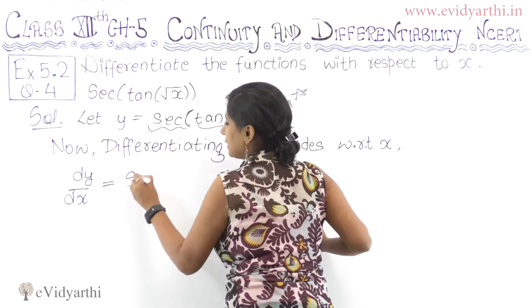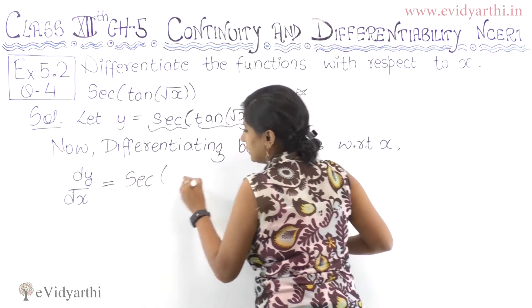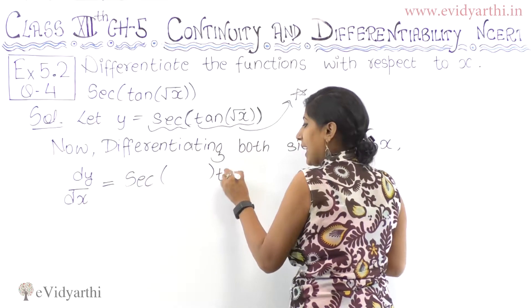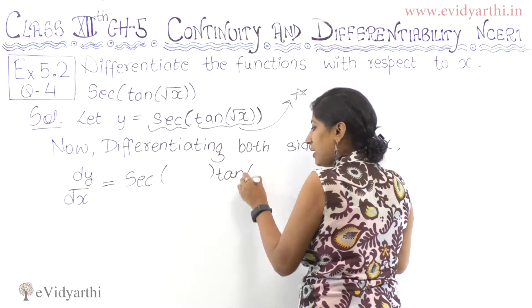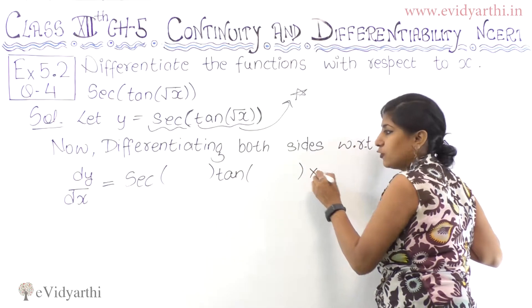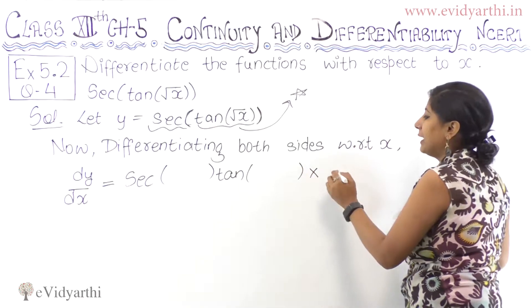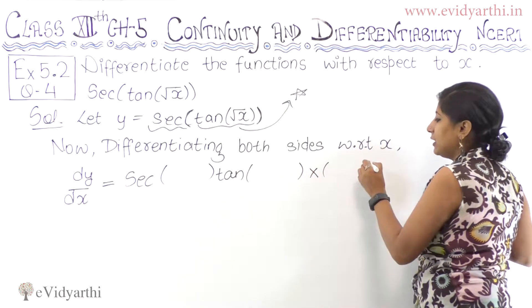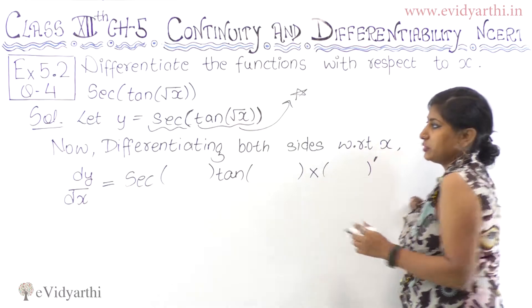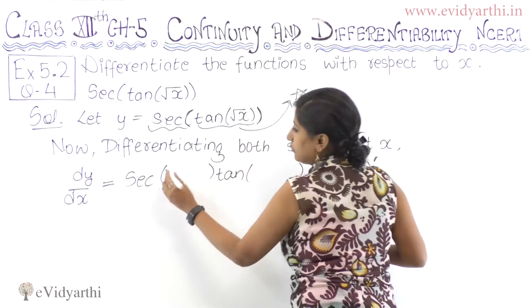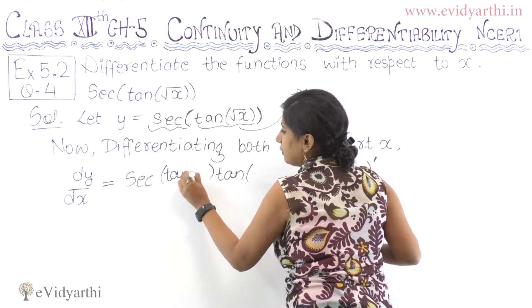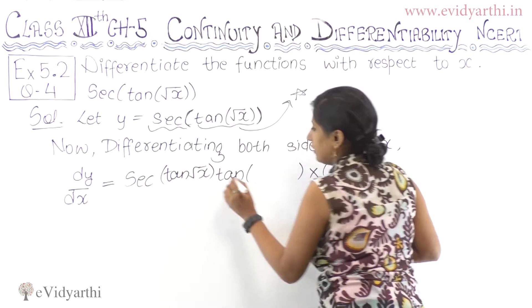So first we write sec. Inside, whatever is there entirely — tan(√x) — stays the same. Along with it, tan of the same argument. And then we need to differentiate the inner part, which is tan of under root x.